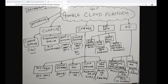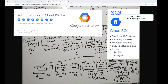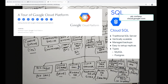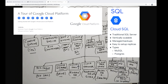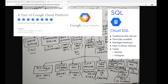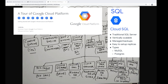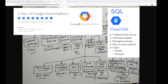Then we have Cloud Storage, which is just like Google Drive or S3 bucket in AWS — you can store all your files, data, and documentation in Cloud Storage provided by GCP. For RDBMS, we have Cloud SQL, which supports SQL databases. You can store data in rows and columns and run SQL queries. Cloud SQL is quite popular for relational database needs.